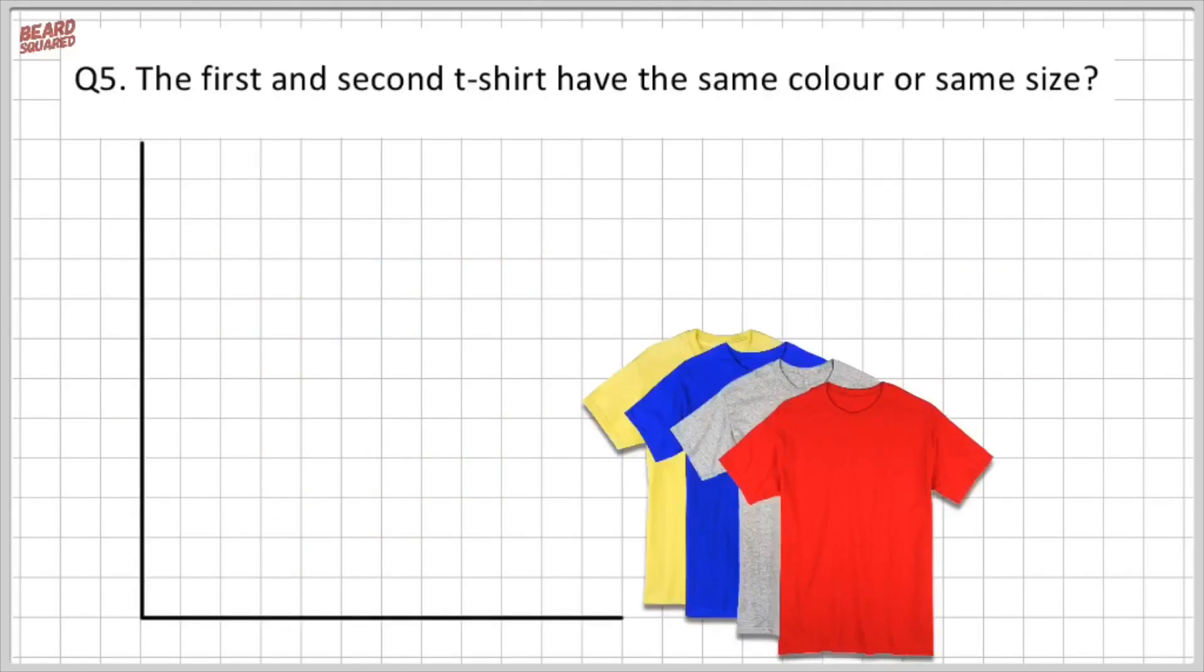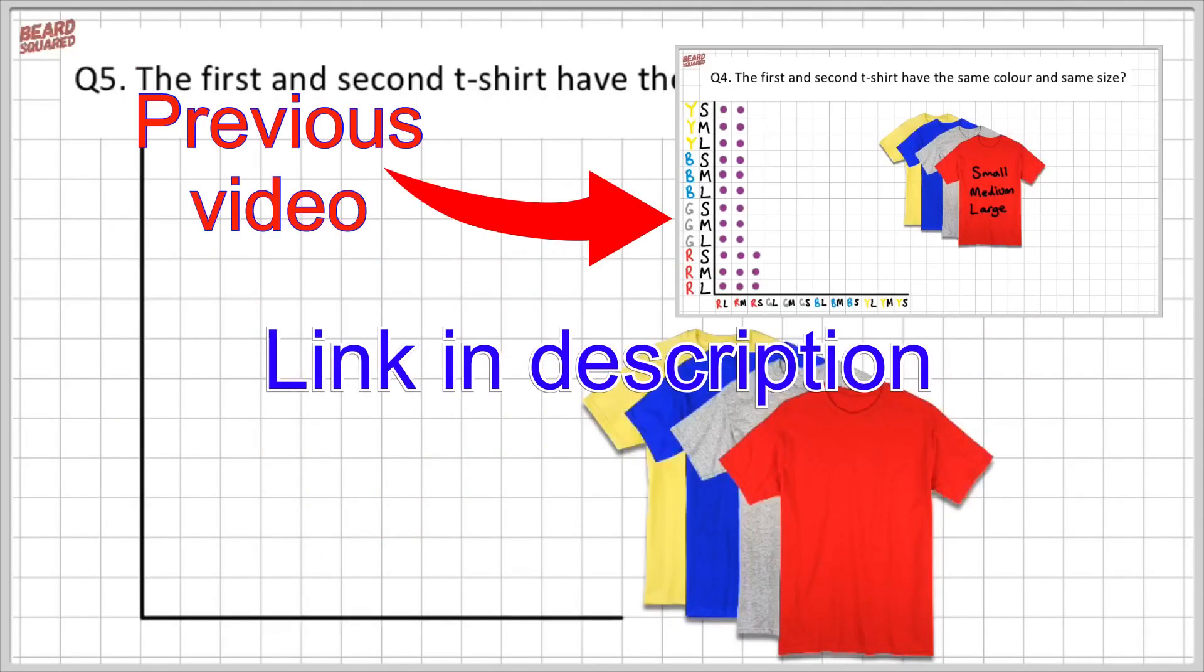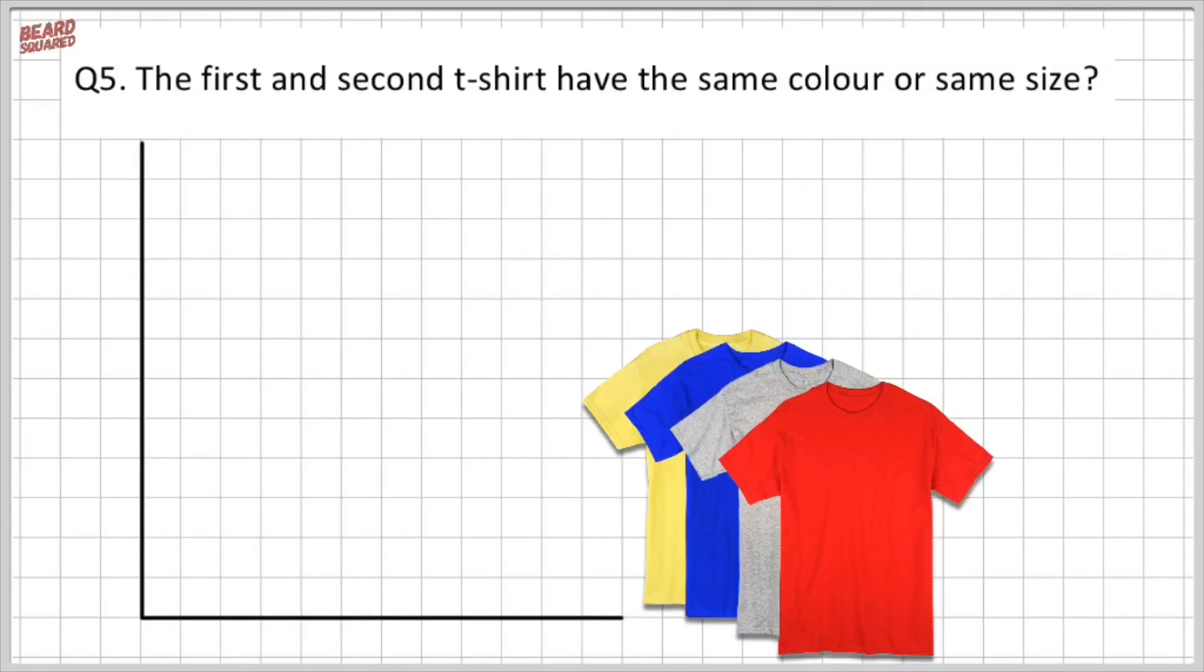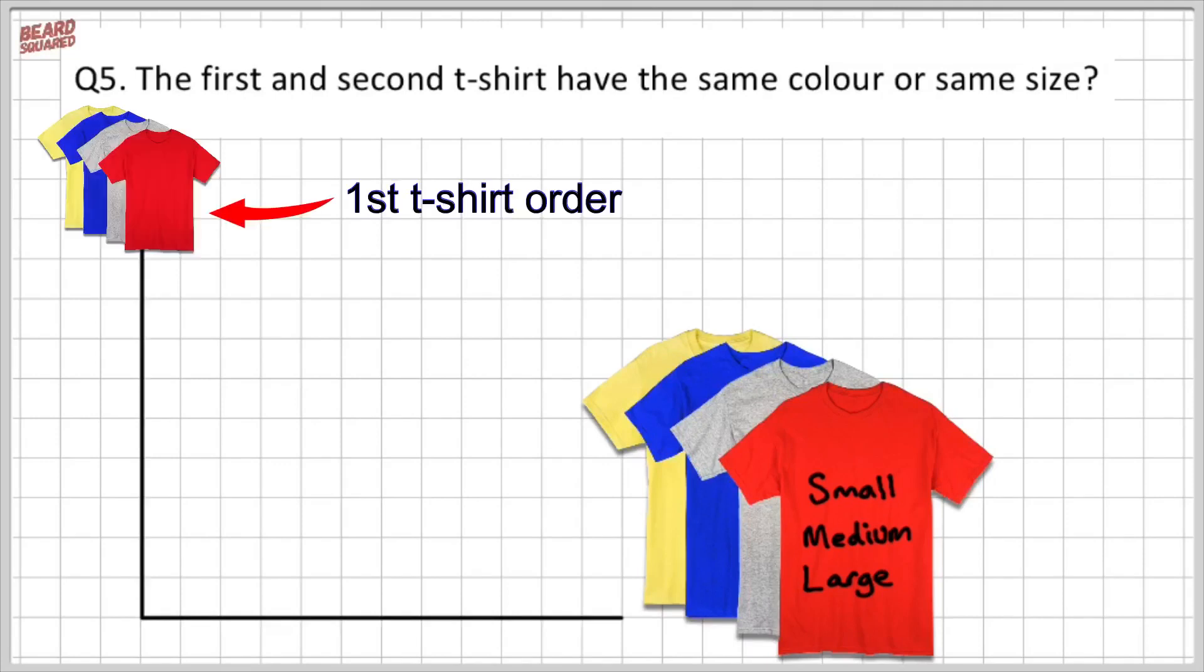So I'm going to be using the same sample space that I did in the previous video. Just to remind you, there's four colors: yellow, blue, gray, and red t-shirts, and we have three different sizes, so we have small, medium, and large. And so we're trying to find out the probability of buying two t-shirts that have the same color or the same size. So I'm going to let the vertical axis of my sample space represent the possible outcomes of t-shirt one, and then the horizontal axis of my sample space can represent the outcomes of t-shirt two.